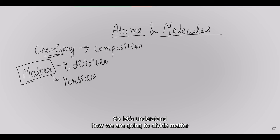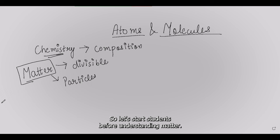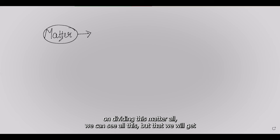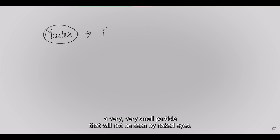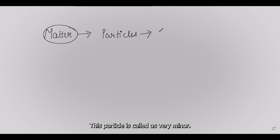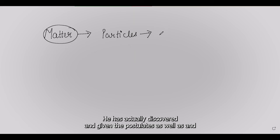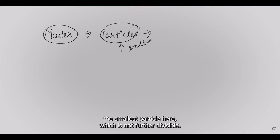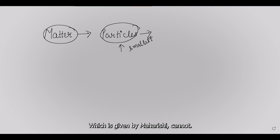Let's understand how we divide matter and what Indian philosophers discovered. Maharshi Kanad postulated that if we keep on dividing matter — called 'spadaat' — we will get a very small particle not visible to the naked eye. When we reach the smallest particle that cannot be divided further, it is called 'parmanu.' This was discovered and postulated by Maharshi Kanad.